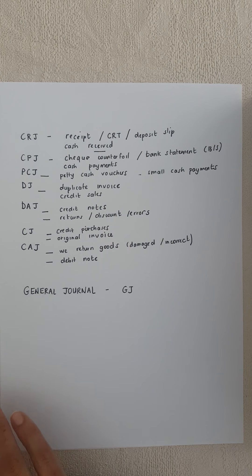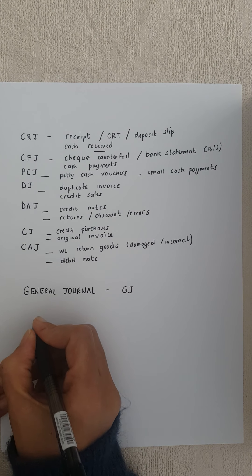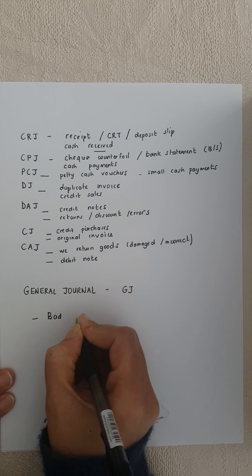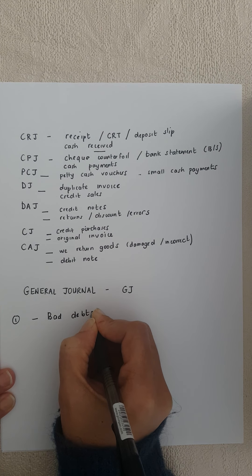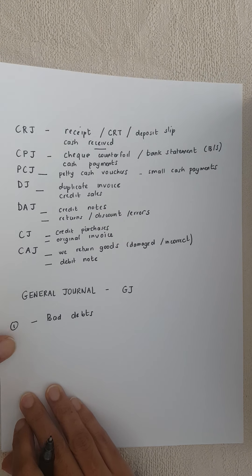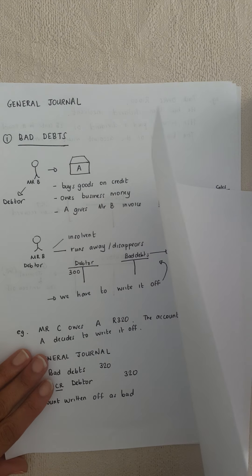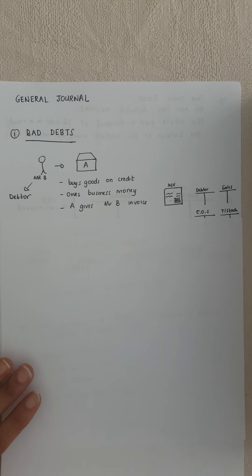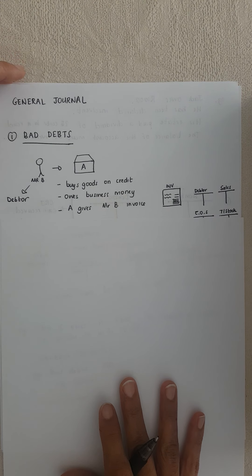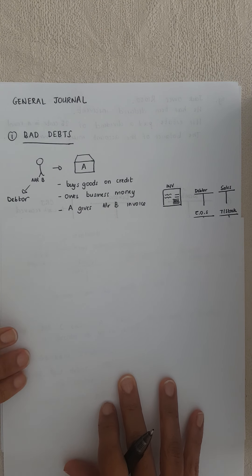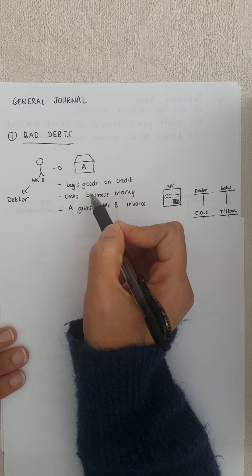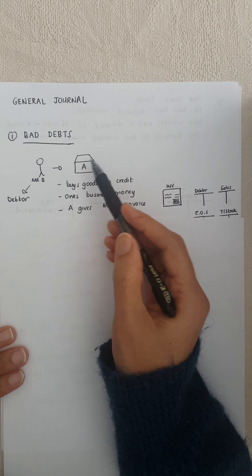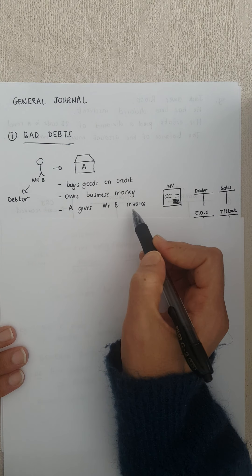Our first example is bad debts. We're going to go through why we have bad debts. We open up a general journal. In this example, Mr B is the debtor — he has gone to our business A and bought some goods on credit, so he owes the business money. Business A gives Mr B an invoice to show he owes 300 rand.